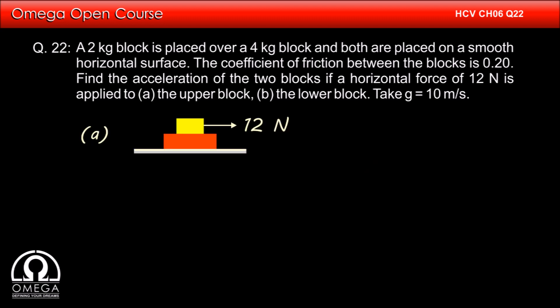The basic problem in this question is that we do not know the magnitude of the friction. If the blocks move independently, there will be kinetic friction whose magnitude is constant and equal to mu times normal. But if the blocks move together, the friction will be static, whose magnitude can be anywhere between 0 to its maximum value of mu times normal. So our first priority is to determine if the blocks are moving together or independently.